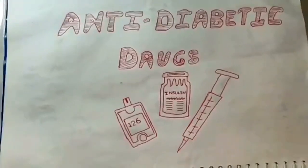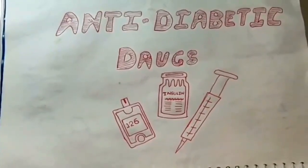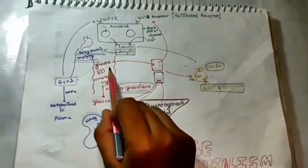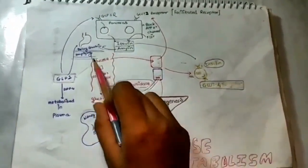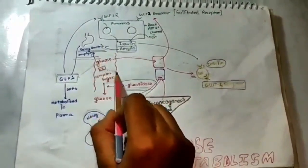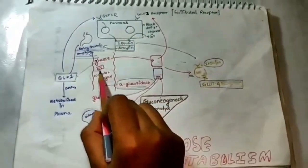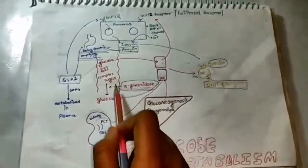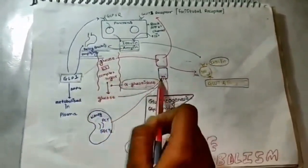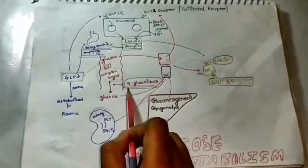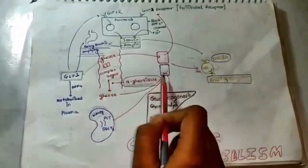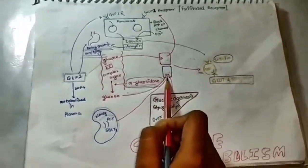Let's get started with the glucose metabolism in our body. When we consume glucose, we can either consume it in the form of simple glucose or in the form of complex sugar like starch, disaccharide, or polysaccharide. In the small intestine, this glucose is absorbed into the metabolic circulation. With the help of an enzyme, alpha-glucosidase, the complex sugar is converted into simple glucose and absorbed into the metabolic circulation.